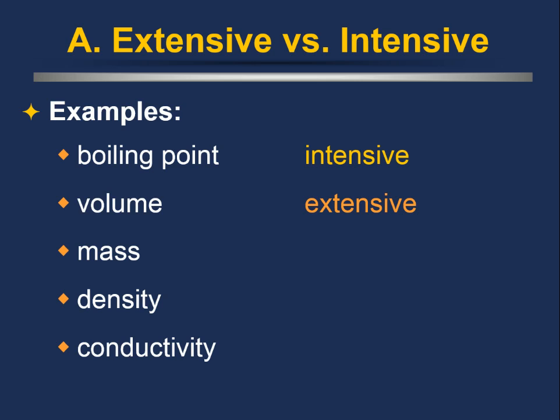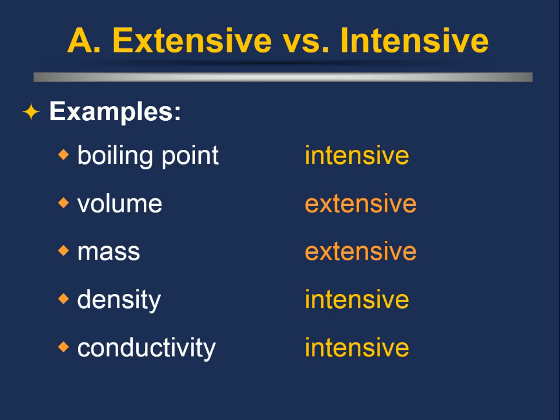If you have a small amount of something, it takes up less volume — that's an extensive property. Mass is also extensive: if I have a thousand eggs, I'll have more egg mass than if I had one egg. Density is an intensive property; different substances have characteristic densities and density will not change based on how much you have. Conductivity — a substance's ability to move electric current or heat through it — is an intensive property. Metals are very good conductors because they are metals; it depends on the substance itself, not how much you have.